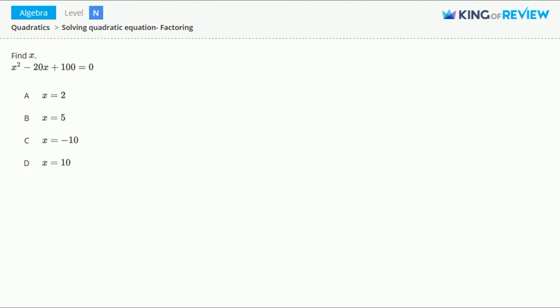Hi, this is King of Review. Find x: x squared minus 20x plus 100 equals 0.